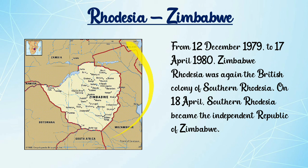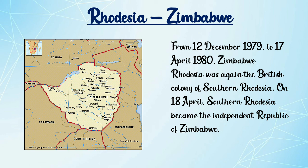Here we can see a map of Zimbabwe or Rhodesia. From 12 December 1979 to 17 April 1980, Zimbabwe-Rhodesia was again the British colony of Southern Rhodesia. On 18 April, Southern Rhodesia became the independent republic of Zimbabwe. Rhodesia is the old name of Zimbabwe and Zimbabwe is the new name of Rhodesia.